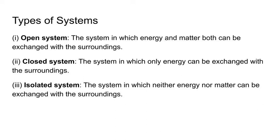Now, there are many types of system jo humein pata honi chahiye — tantr ke prakar. Types of system. First, open system: the system in which energy and matter both can be exchanged with the surrounding is known as open system. Khula tantr — jab kisi tantr ki pari seema se dravye guzar sakta ho, artha tantr se dravye nikal bhi sakta ho aur tantr mein dravye aane bhi sakta ho, to hum aise tantr ko khula tantr ya open system kehte hain. Aise tantr ka apne surrounding se urja evam dravye dono ka exchange hota hai. Example: yadi hum garam jal lenge, to hum dekhte hain ki woh pani thanda bhi ho jata hai — matlab ushmaa bhi adaan-pradaan ho gayi — aur yadi hum use khula padhe karenge, to kuch samay baad woh evaporate bhi ho jata hai, matlab matter ka exchange bhi ho jata hai.